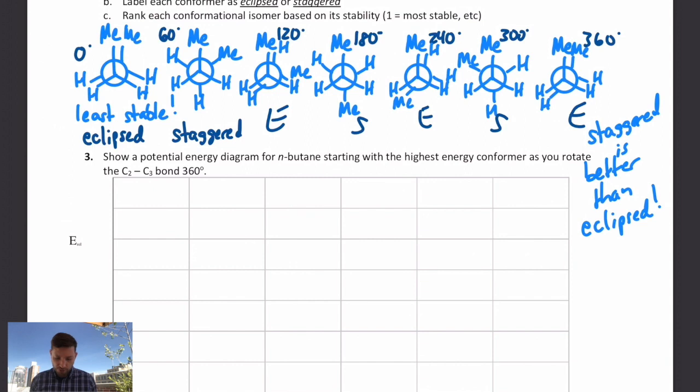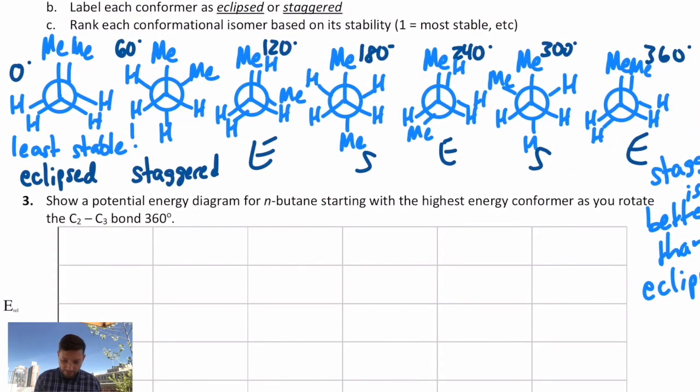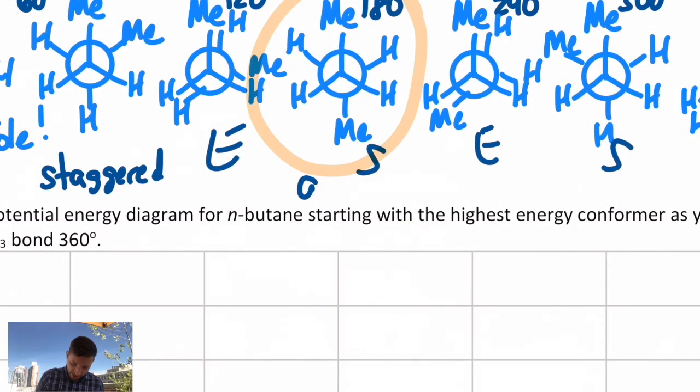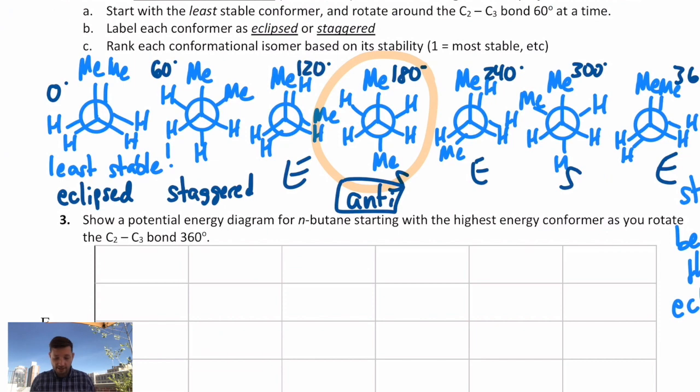But not all those staggereds are created equal, and not all those eclipsed conformers are created equal. Some of them are better than others. So let's rank them in terms of stability with what we think, one being the most stable. Well, which one's the best? It's the one we happen to hit right in the middle. That's going to be our best one, because if you look at it, that has those two methyls as far apart as possible in that particular staggered arrangement. We call those in an anti conformation, because the methyl groups are pointing in opposite directions.